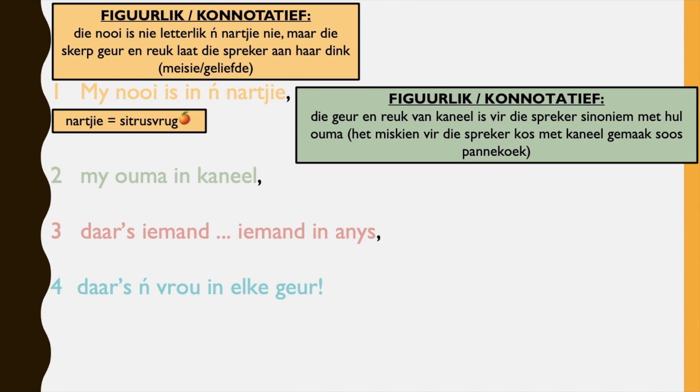My ouma in kaneel — my grandmother in cinnamon. Vergierlik, figurative. Die geur en reuk van kaneel is vir die spreker sinoniem met die ouma. Het miskien vir die spreker kos met kaneel gemaak, so panekook. So the smell, scent, flavor, aroma of cinnamon is synonymous for the speaker with their grandmother. This might just mean that the grandmother used cinnamon in their cooking — the example I have is panekook, that's the first thing I think of when I think of cinnamon. Kaneel is 'n speserye — it's a spice.